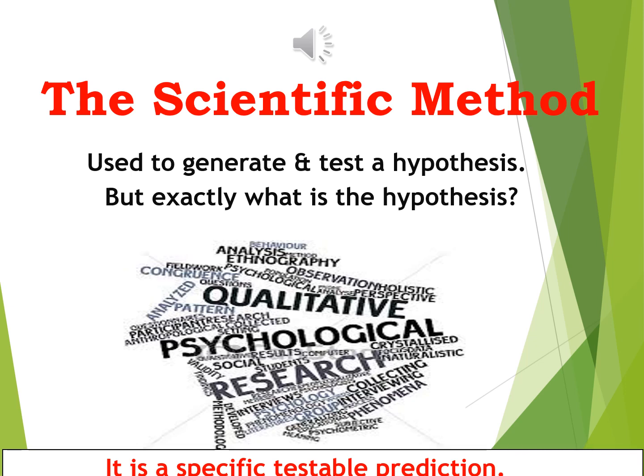The scientific method is used to generate and test a specific hypothesis. But what is a hypothesis? It is a testable prediction, and it needs to be specific. You can't just say this thing affects the other thing — that's too vague. How does it affect it? Does it get slower, faster, stronger, weaker, sadder, happier, more accurate, less accurate? It must be a very specific, testable prediction.